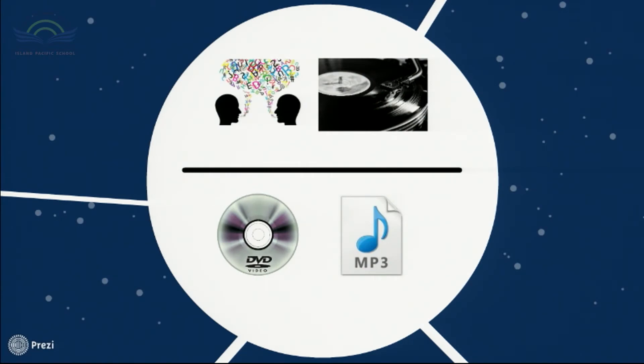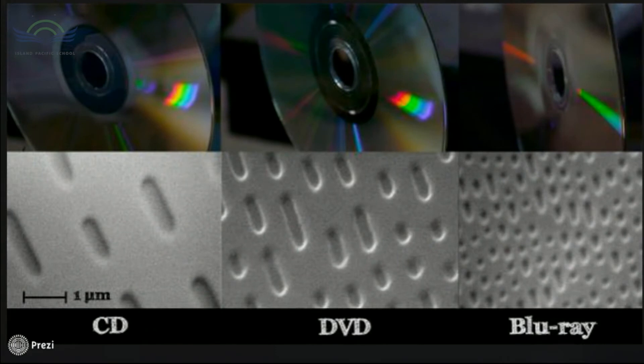Before we start to look at sampling, let's zoom in on the DVD. As I said, digital information is stored in ones and zeros. The information stored in ones and zeros is visible on these discs with a very powerful microscope. As you can see here, the scale is one nanometer, which is very small. These dots and dashes on the disc are kind of like Morse code — they tell the disc reader what to do. From this picture, we can see that the Blu-ray contains the most amount of information. With this in mind, let's go back to sampling.